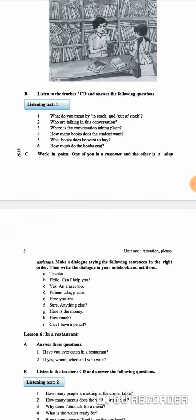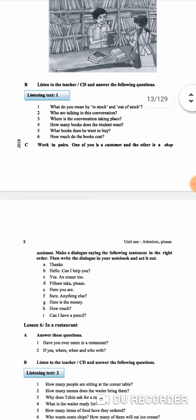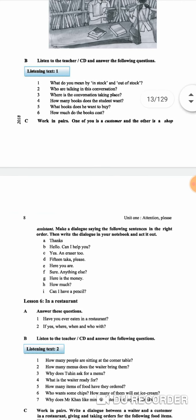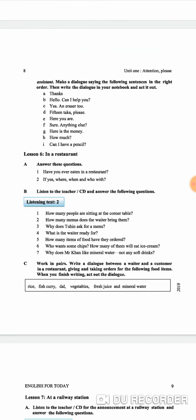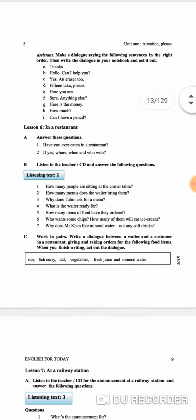How many books does the student want? It's up to you, I don't know. Make a dialogue saying the following sentences in the right order. Hello, can I help you? Yes, and an eraser too. Fifteen taka please. Here you are. Anything else? Here is the money. How much? Can I have a pencil?